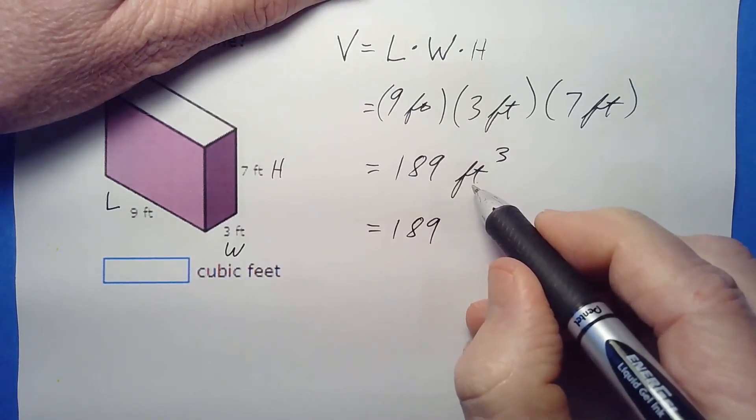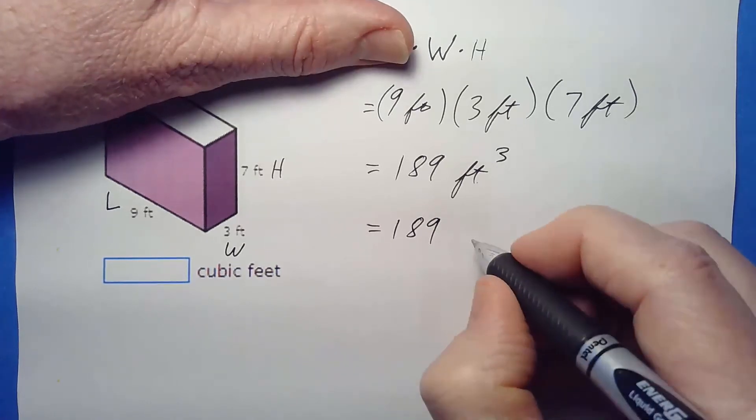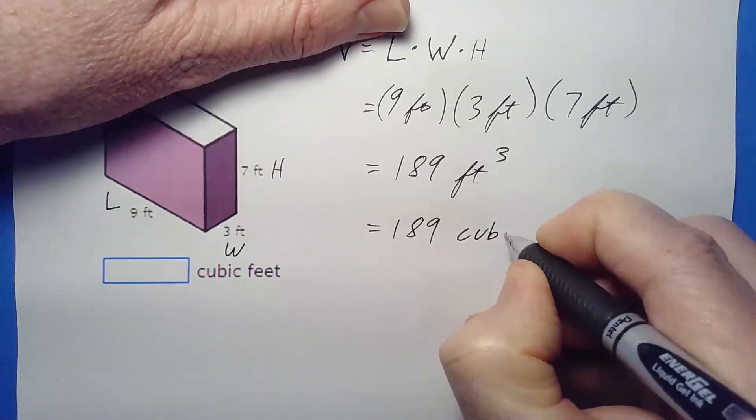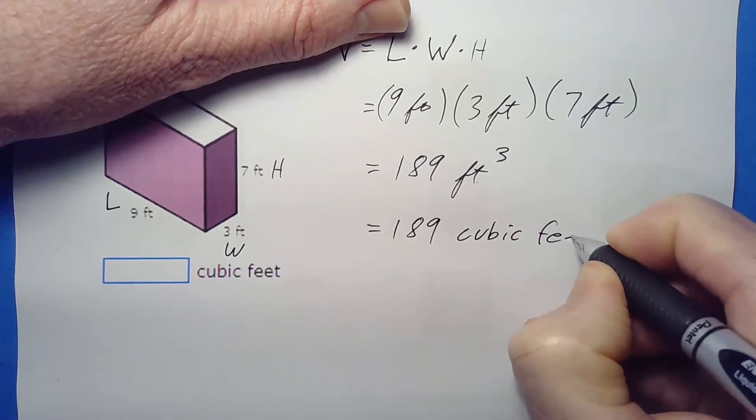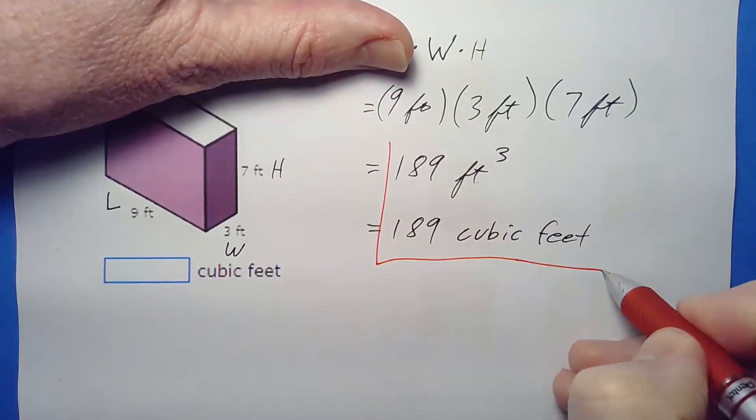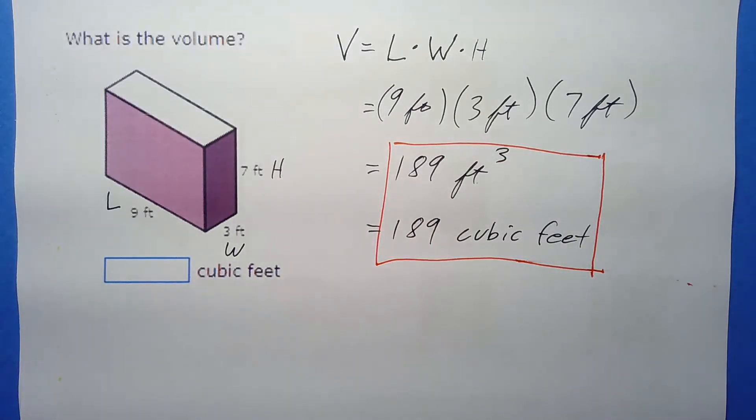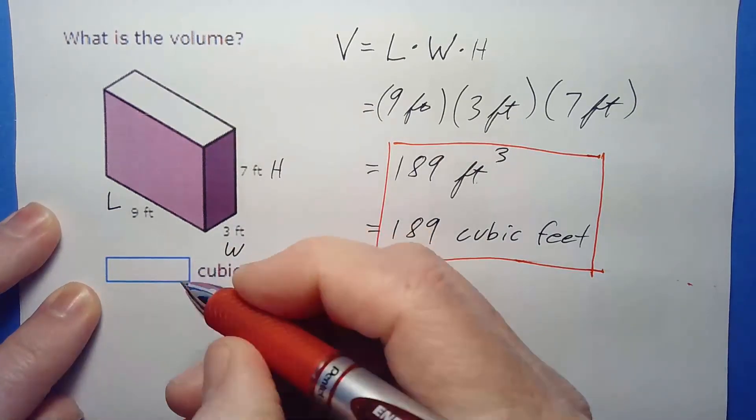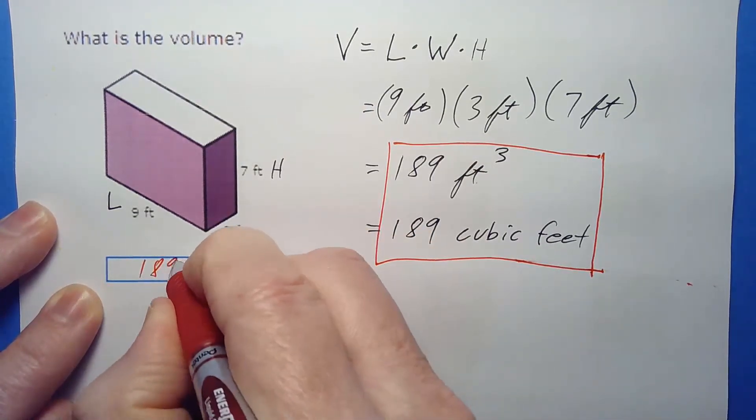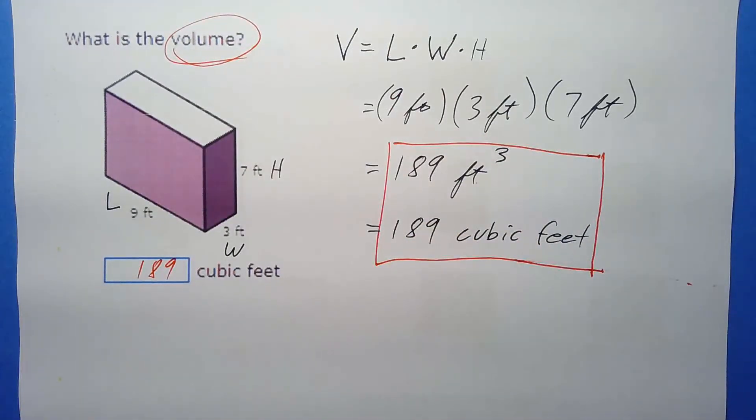Now look, feet times feet times feet, that means you have feet cubed, right? Now I usually call it feet cube myself, but you can also write that out in words, especially if you're typing it, right? If you're in an email program or something, it's a little harder to say feet cubed like this, so you might just call it cubic feet.